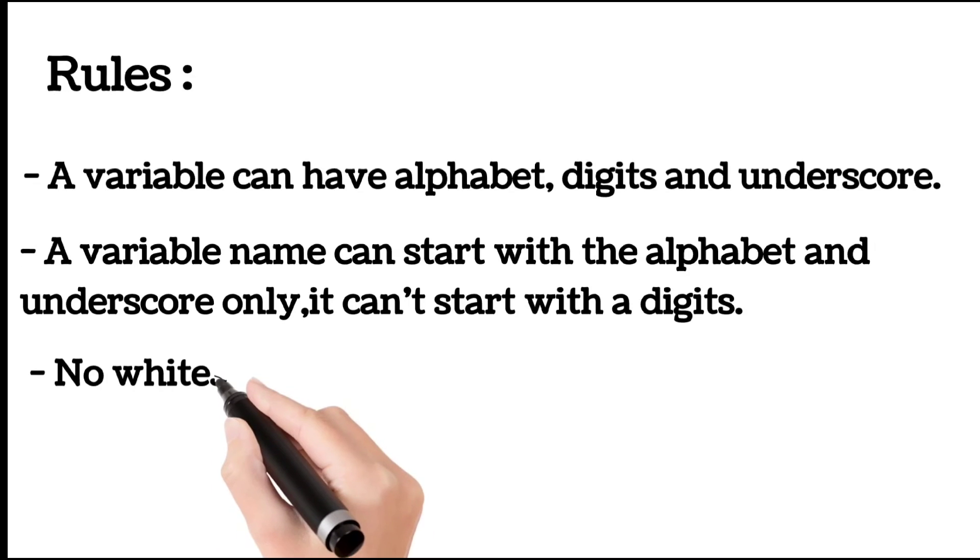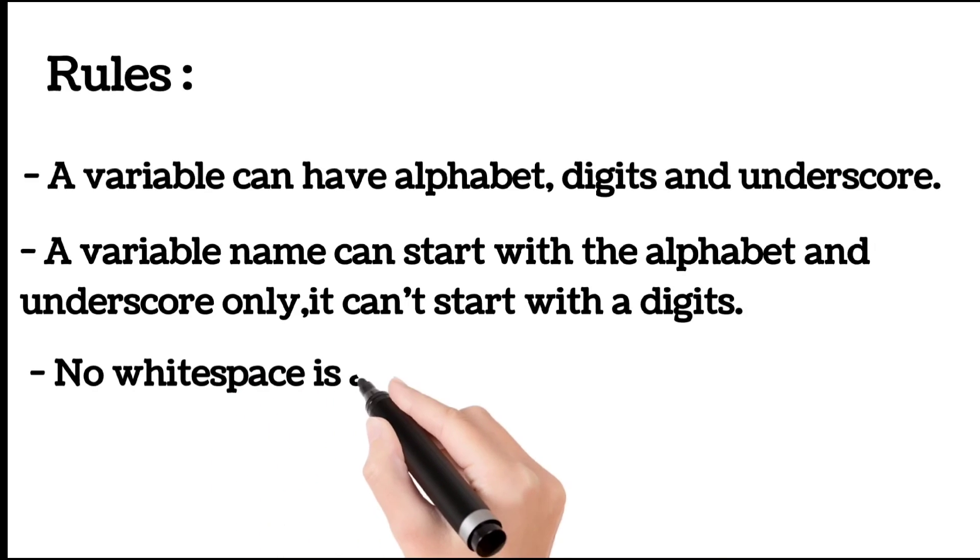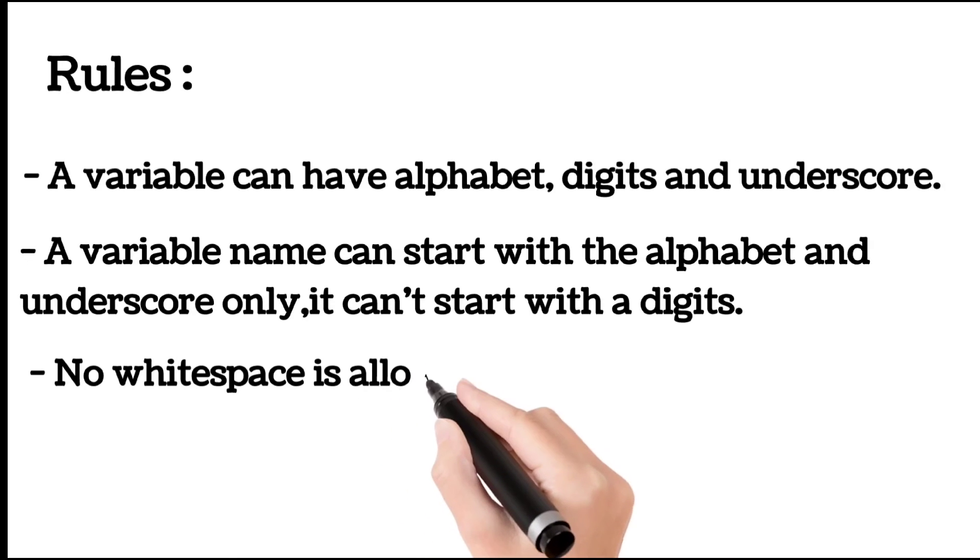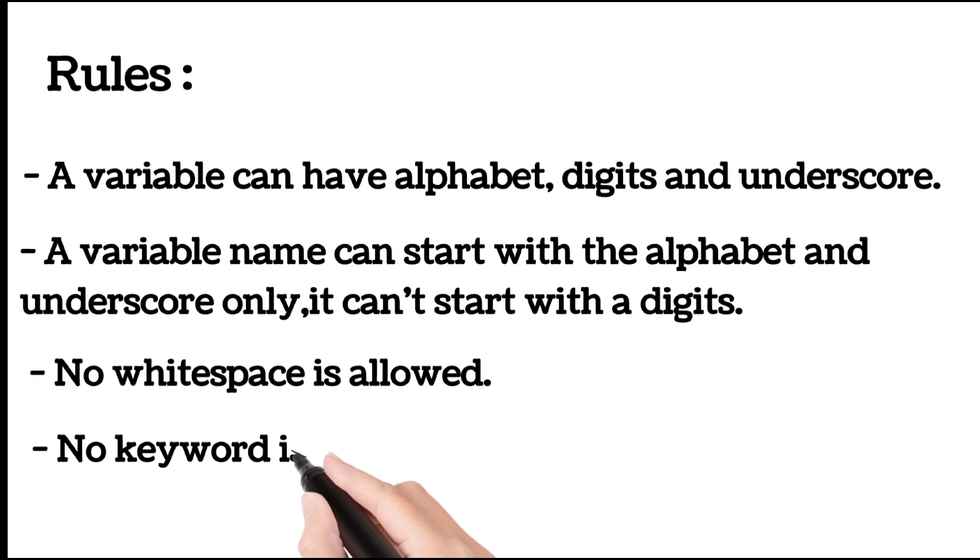Next rule is no whitespace is allowed, which we have seen in the previous video - whitespaces like new line, horizontal tab, these are not allowed in the variable. Last is no keywords are allowed. There are 32 keywords in C language, so these are not allowed in the variable. This is the rules of variable.